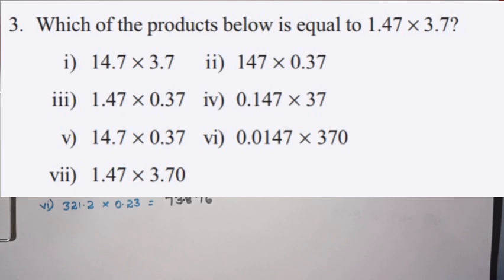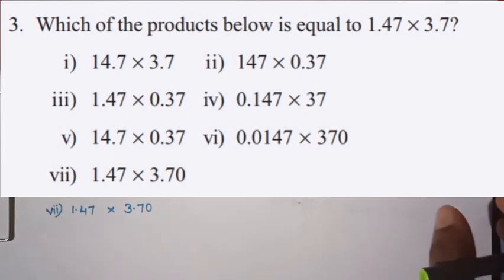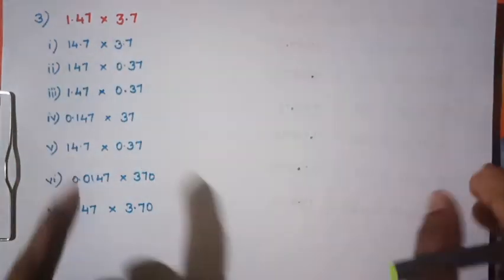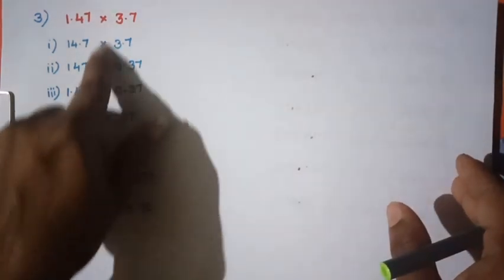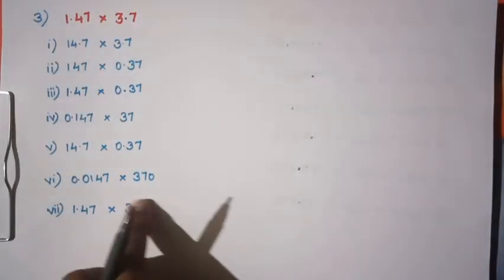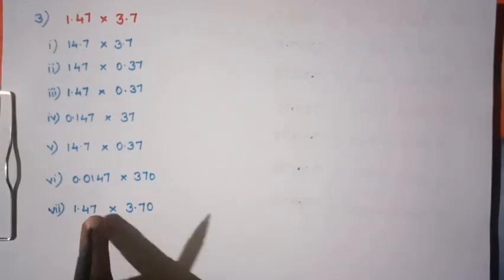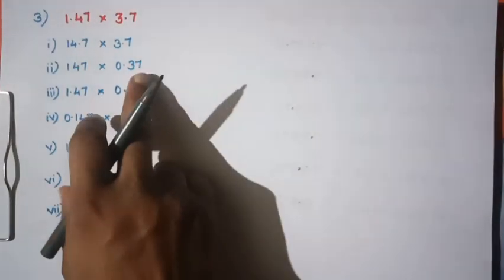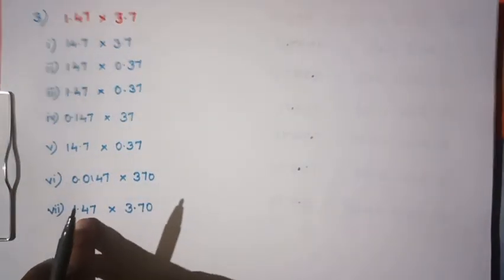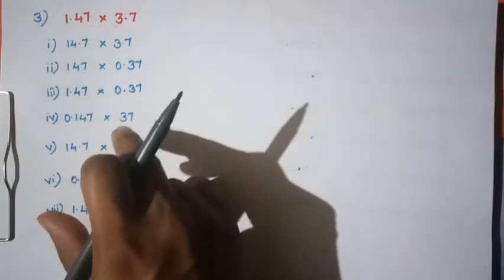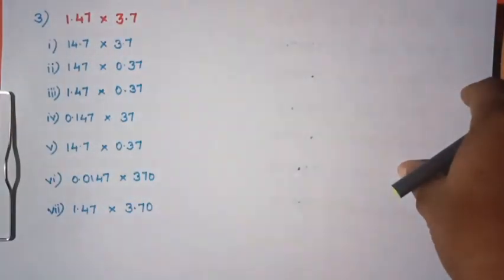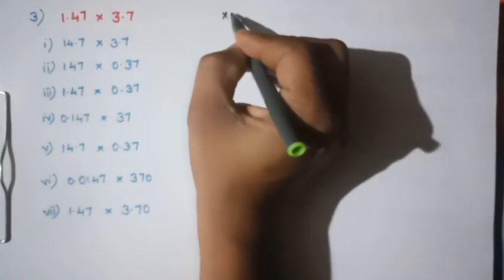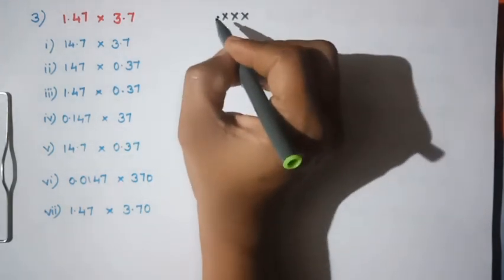Let's see — if you have 3 decimal points. Which of the products below is equal to 1.47 × 3.7? If you have the same digits multiplied together with different decimal placement, you get the same product. Count the decimal places: 1.47 has 2 decimal places and 3.7 has 1 — total 3 decimal places.